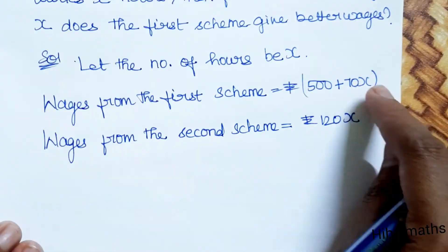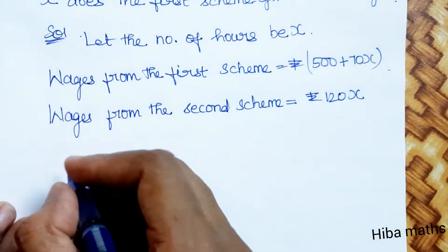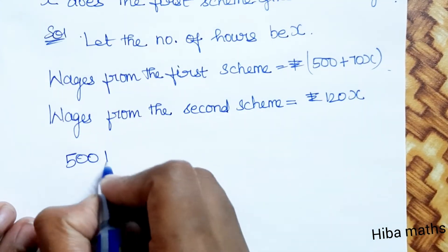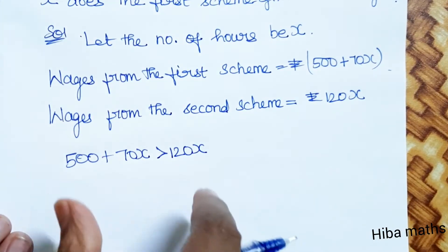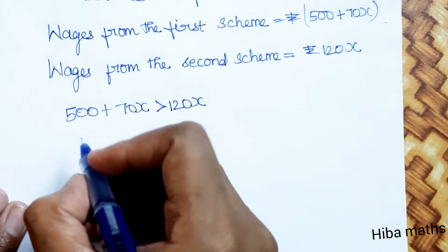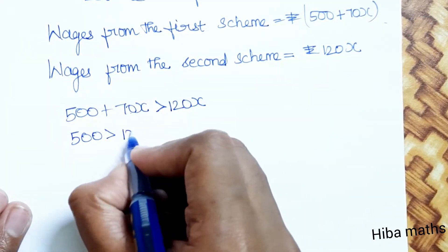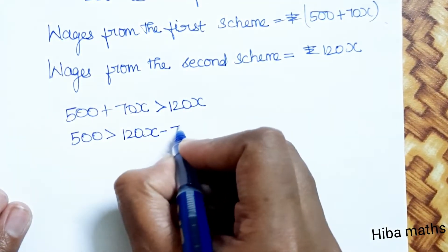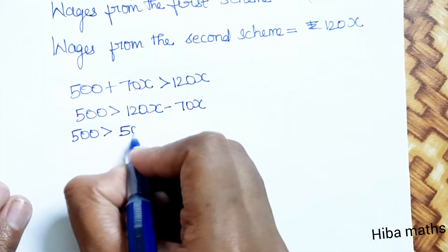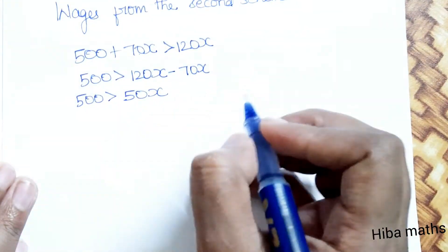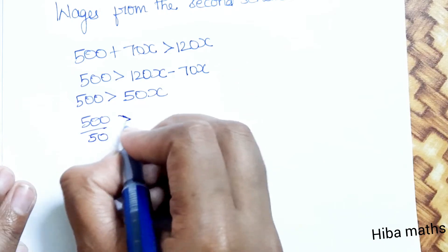For the first scheme to give better wages than the second scheme, we set up the inequality: 500 plus 70x is greater than 120x. This gives us 500 is greater than 120 minus 70, which is 50. So 500 divided by 50, which means X is less than 10.